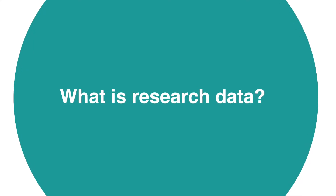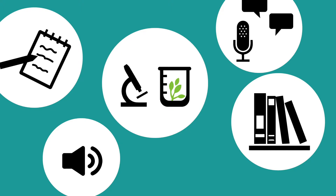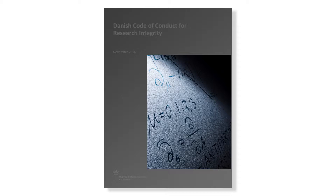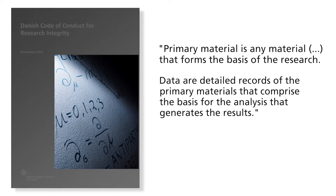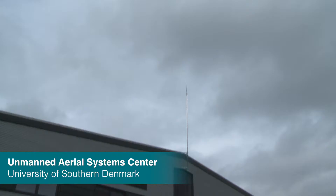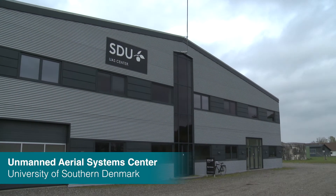But what is research data? Research data can have many forms and the definition varies greatly across disciplines. The Danish Code of Conduct for Research Integrity gives the following definition: primary material is any material that forms the basis of the research. Data are detailed records of the primary materials that comprise the basis for the analysis that generates the results.